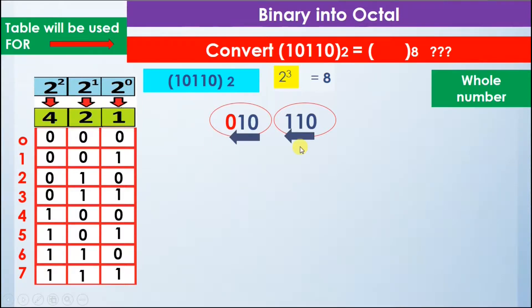Now we have made groups of 3 bits. First, we look at the group 010 and find it in the table. Here is 010 in the table, and it equals octal digit 2.